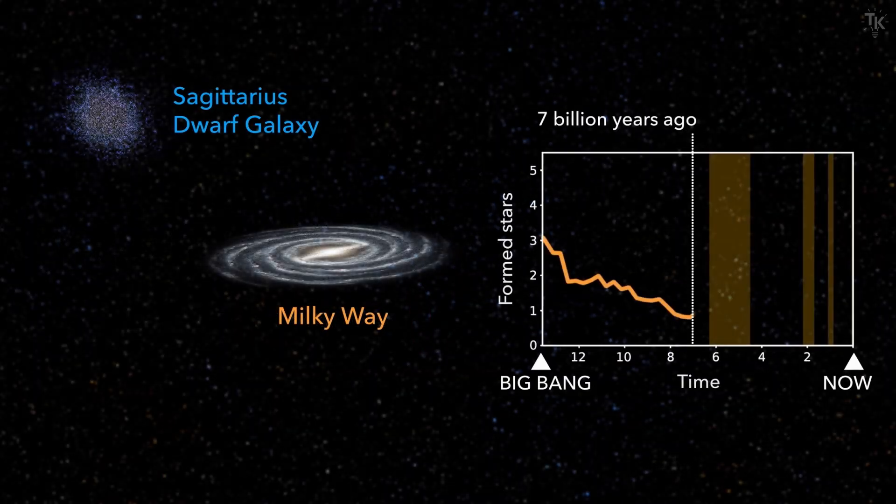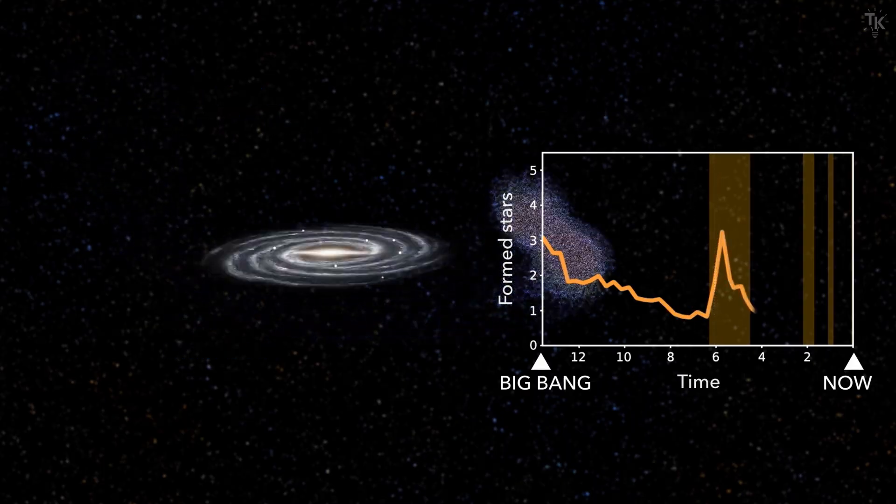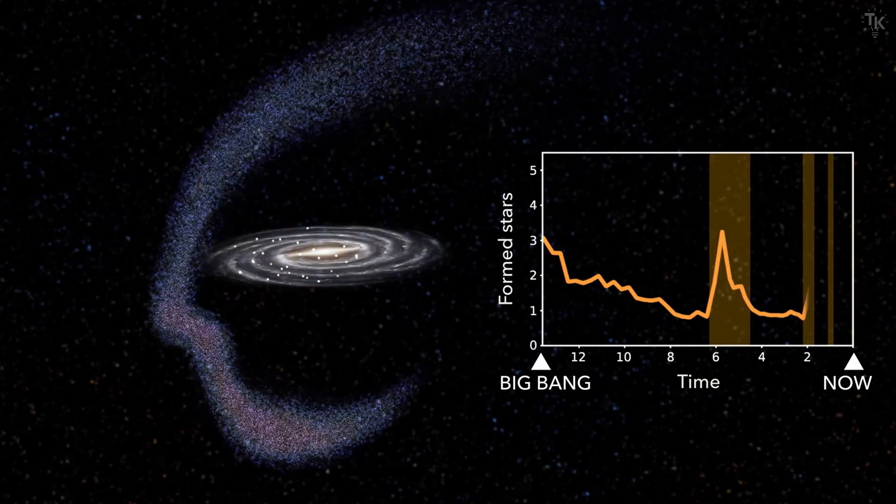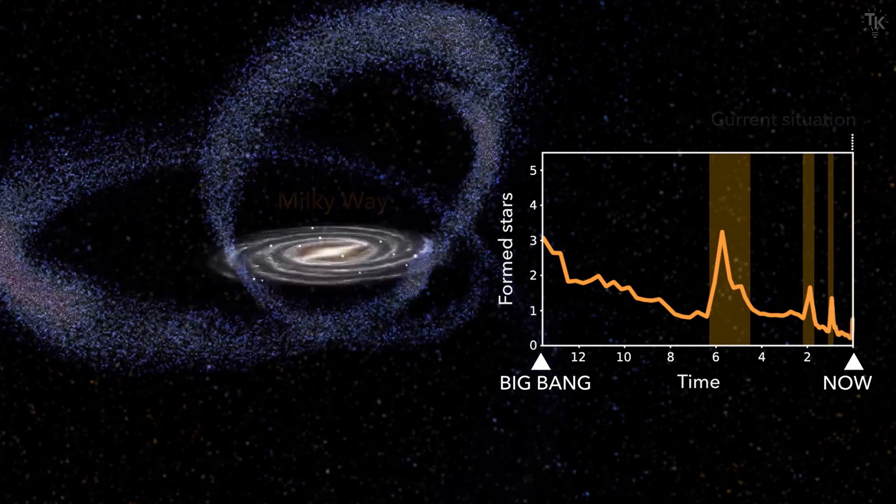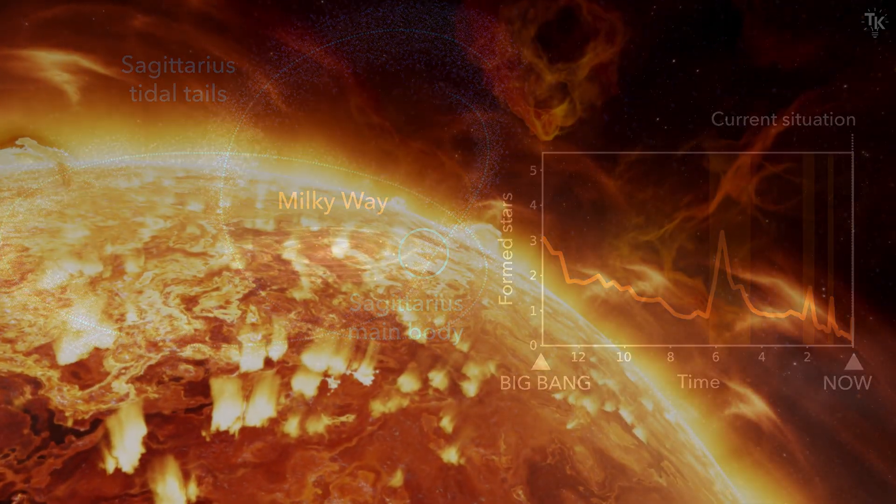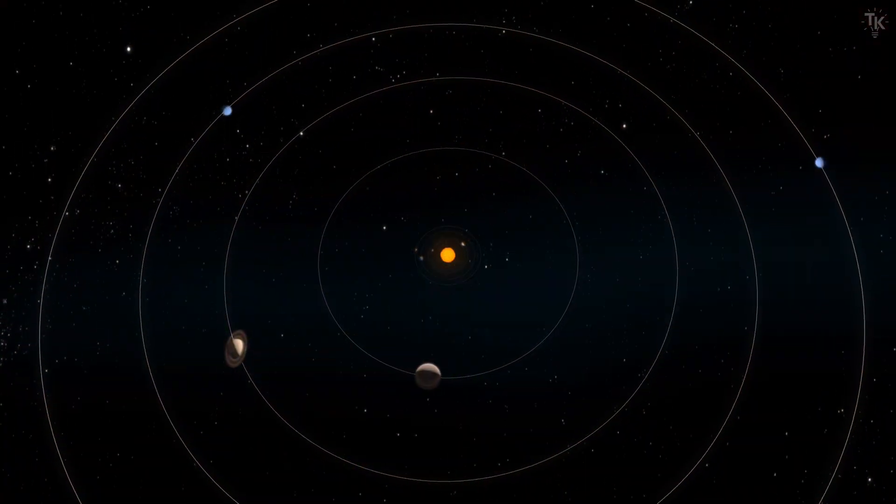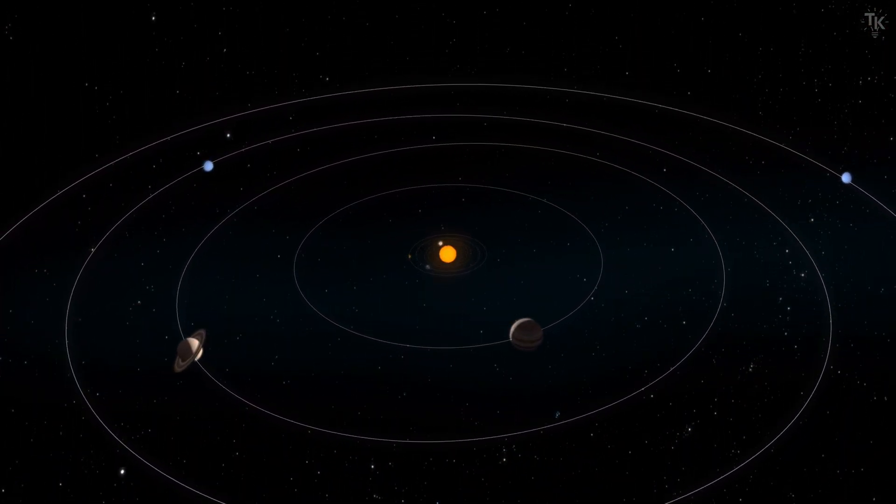This graph shows the number of stars formed over time. It records three distinct peaks, the earliest at 5.7 billion years ago, and these peaks align with the collision times of the Sagittarius Dwarf Galaxy. The Sun was born about 4.6 billion years ago. It is possible that the solar system itself was formed as a result of one of these collisions.